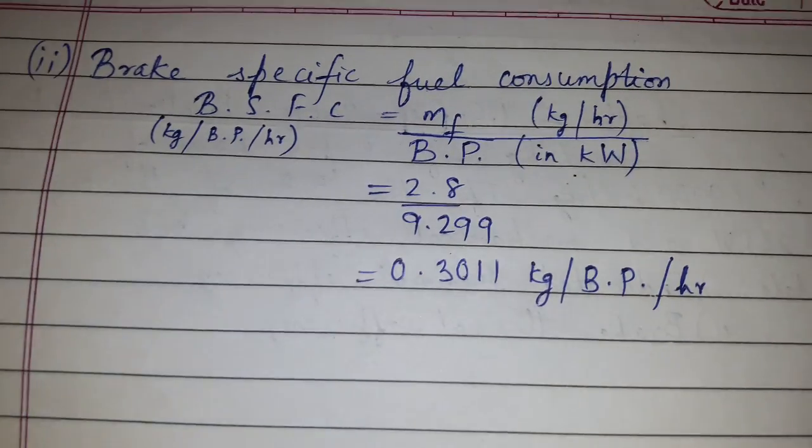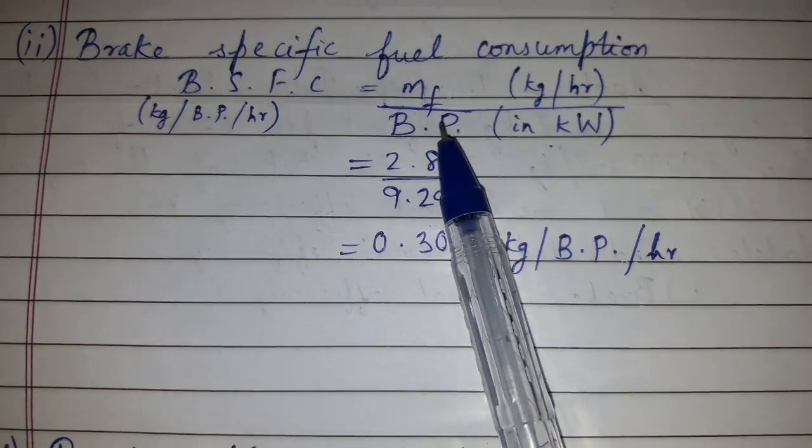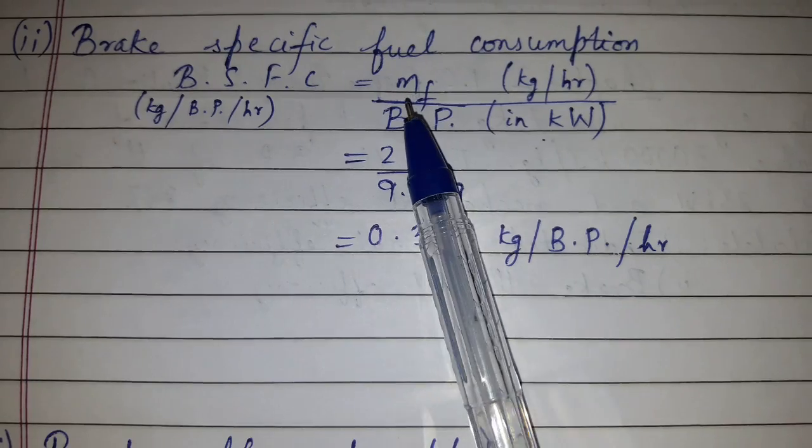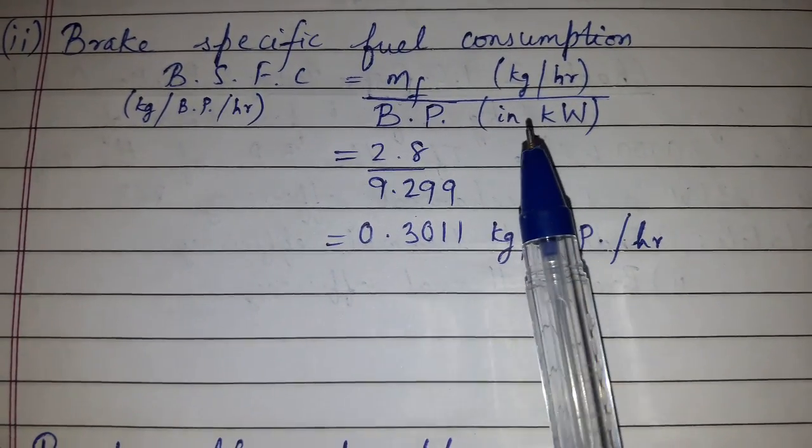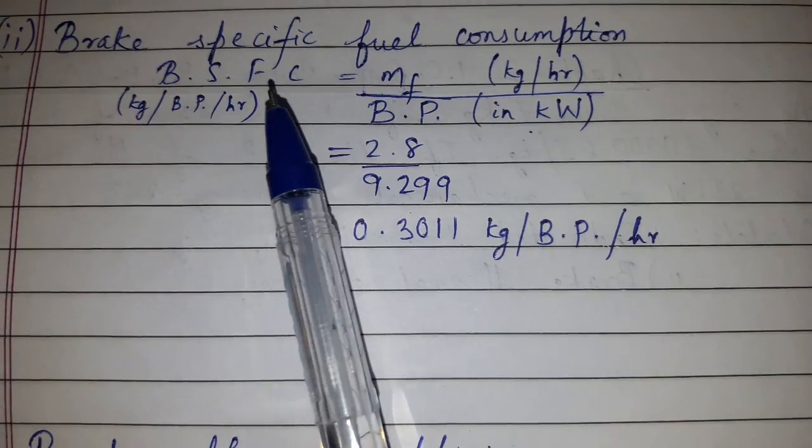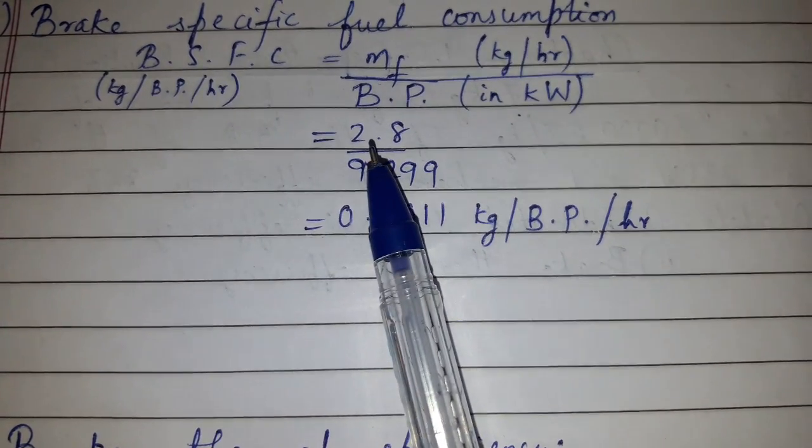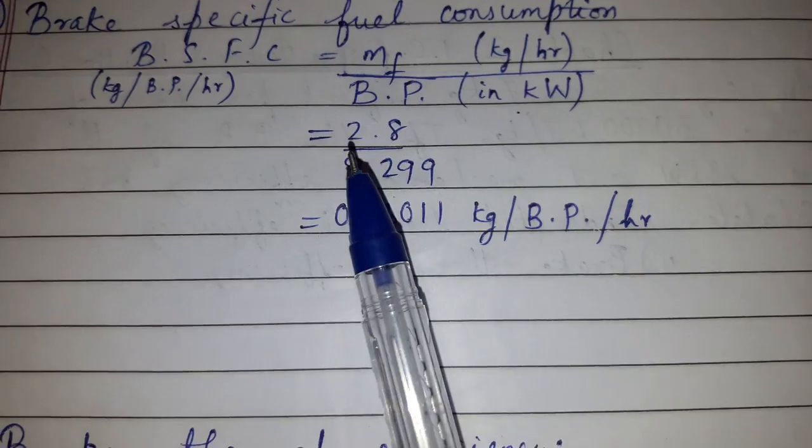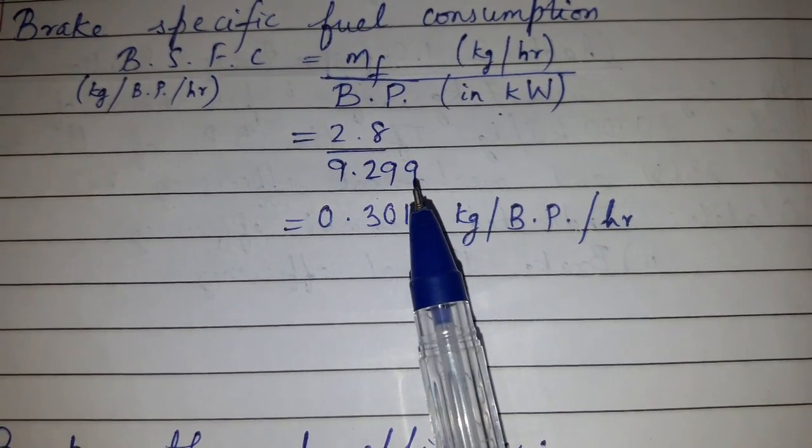Now we need to find brake specific fuel consumption. Brake specific fuel consumption = MF / BP where MF is kg per hour and BP is in kilowatt. Then we will get BSFC in kg per BP per hour. So MF is given 2.8 and BP which we found is 9.299 kilowatt. So we got 0.3011 kg per BP per hour.